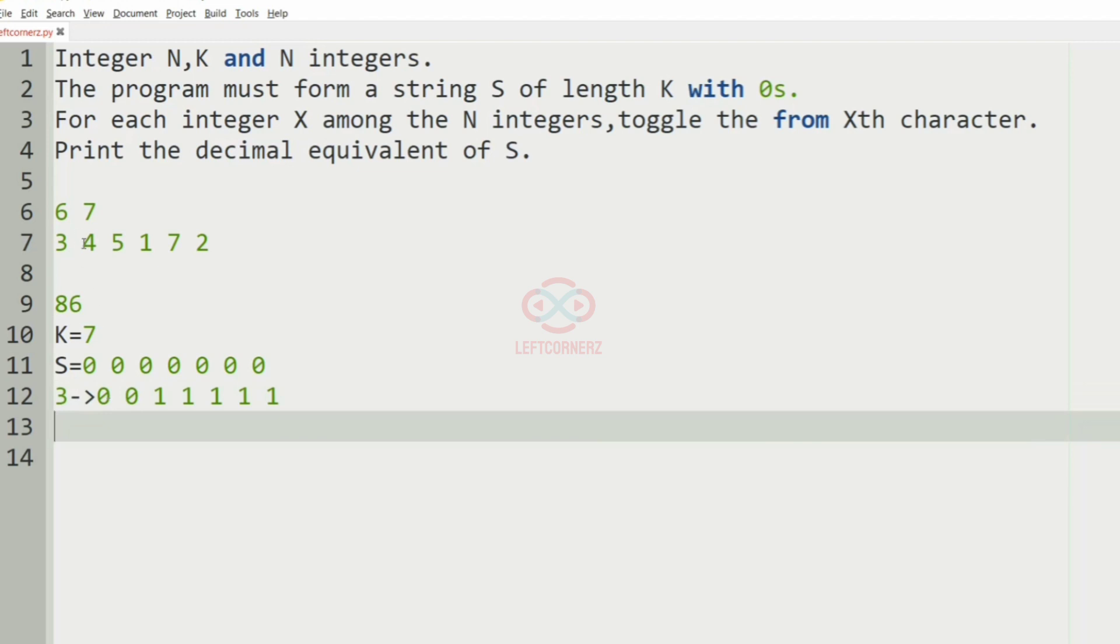And then we have four so we'll toggle from the fourth position. So it is 0 0 1 0 0 0 0.